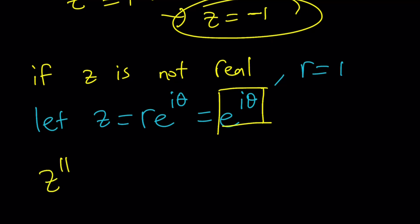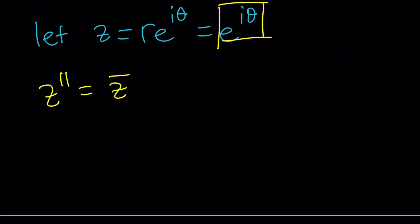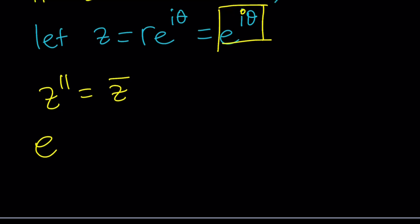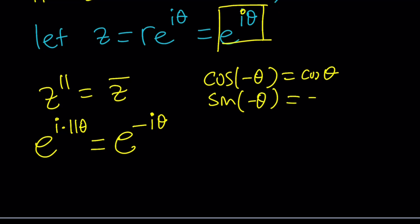So now we have Z to the 11th equals Z bar. We can easily find it. If Z is E to the I theta, Z to the 11th power is by De Moivre, De Moivre, okay? I can't say it. It's going to be E to the I times 11 theta, and this is just going to be E to the power negative I theta. Remember, you just find the conjugate by negating the imaginary part or just negating the theta because cosine is an even function. So cosine of negative theta is going to be positive cosine theta. But sine of negative theta is going to be negative sine of theta. And multiply by I, put these together, and you'll get the idea. Make sense? Cool.